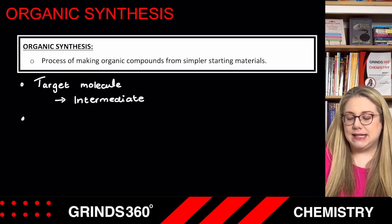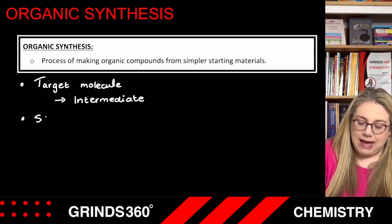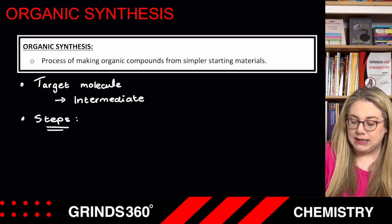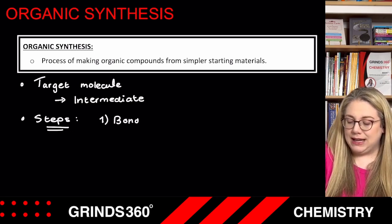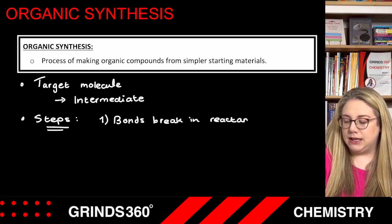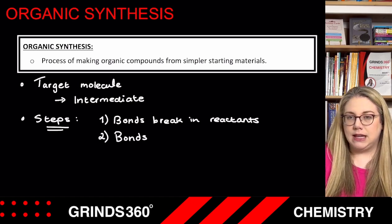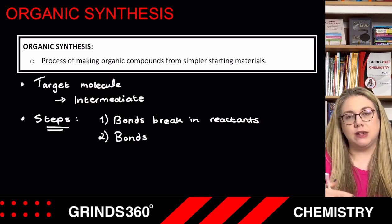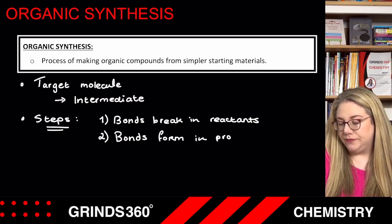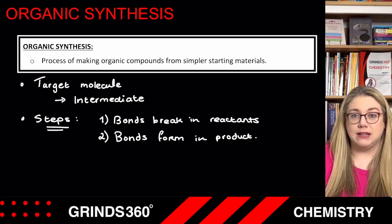When a scientist is figuring out what steps are involved in the organic synthesis, the two steps the examiner wants you to note are: number one, bonds break in the reactants — because if those bonds don't break, absolutely nothing is going to happen — and number two, once bonds have broken in the reactants, you are able to form product molecules, whether that's your intermediate or your target molecule. Bonds form in the product. That's all the examiner was looking for in the 2022 deferred paper.